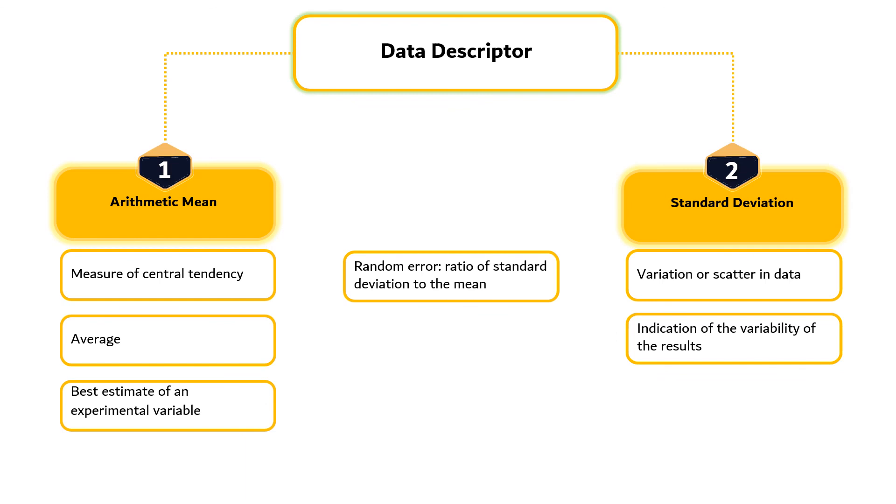The ratio of standard deviation to the mean gives some indication of random error in the data.